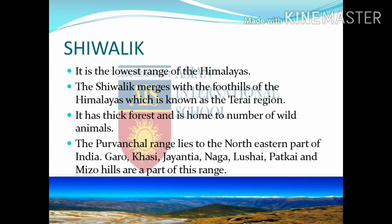Now we will read about the Shivalik. It is the lowest range of the Himalayas. The Shivalik merges with the foothills of the Himalayas, which is known as the Terai region. It has thick forests and is home to a large number of wild animals. The Purwanchal range lies to the northeastern part of India. Garo, Khasi, Jayantia, Naga, Lusai, Patkai and Mizo Hills are a part of this range.